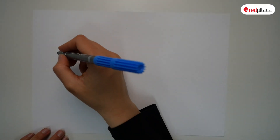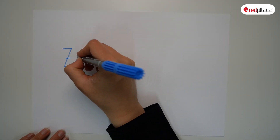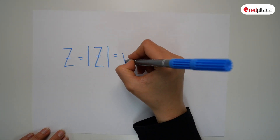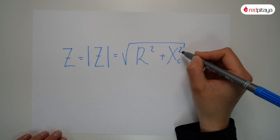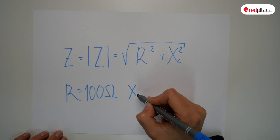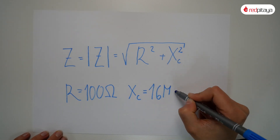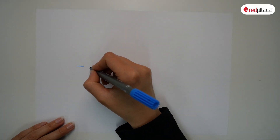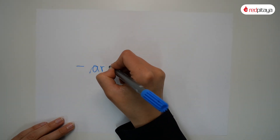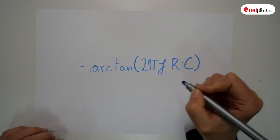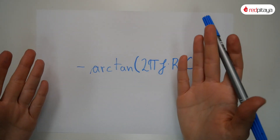First, we'll take a look at amplitude response, for which we need absolute impedance. We can calculate it this way. Resistance is 100 ohm, and reactance is about 16 mega-ohms over hertz. Phase shift may be a bit more difficult to understand, but this equation is simpler. I could talk more about it, but let's not waste our time and move on.